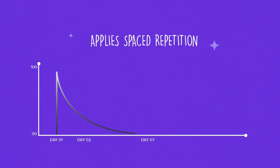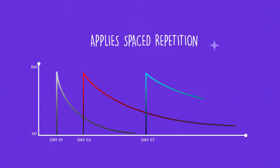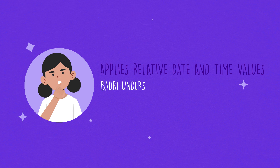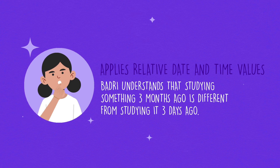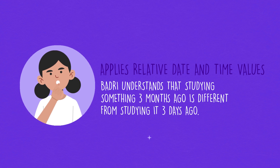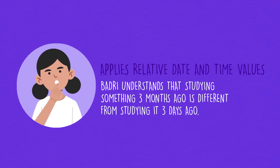Depending on the pace of each twin, this spaced repetition levels the playing field. It also understands the difference between 10 interactions in one day and 10 interactions in 10 days. So, it uses relative date and time values that make learning faster.